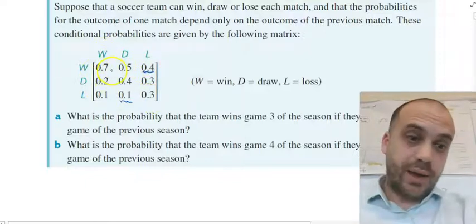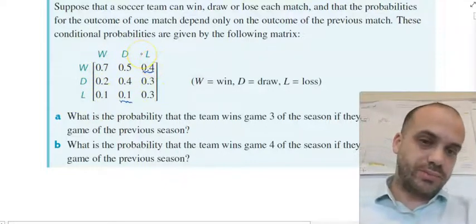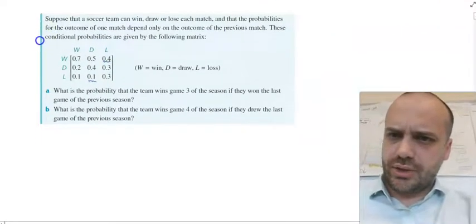You should note here that all of the columns will add up to 1. Because if they won their last match, something has to happen the next time they play. Win, draw or loss. So these need to add up to 1. These need to add up to 1. And these need to add up to 1.